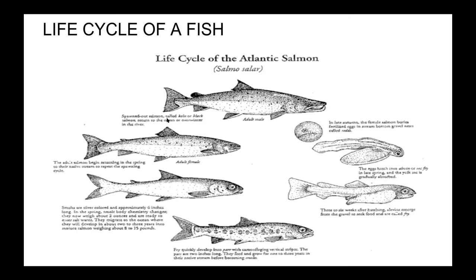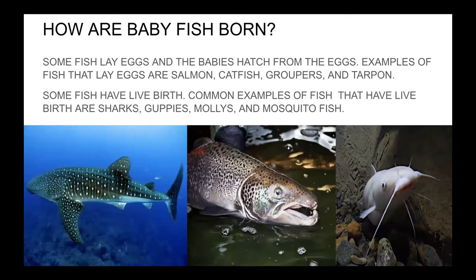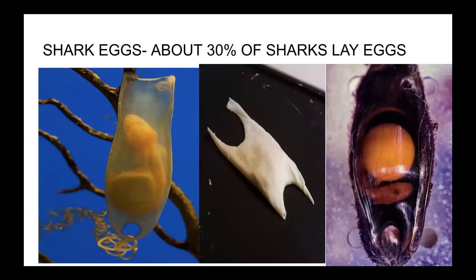You might be familiar with salmon — maybe your parents grill salmon steak on the barbecue. Some fish lay eggs: common examples are salmon, catfish, groupers, and tarpon. Some fish have live birth: common examples are guppies, mollies, and mosquito fish — also called gambusia. When you come to the environmental center on a field trip, maybe you can see some gambusia. Not all sharks have live birth — about 70% have live birth and about 30% lay eggs.